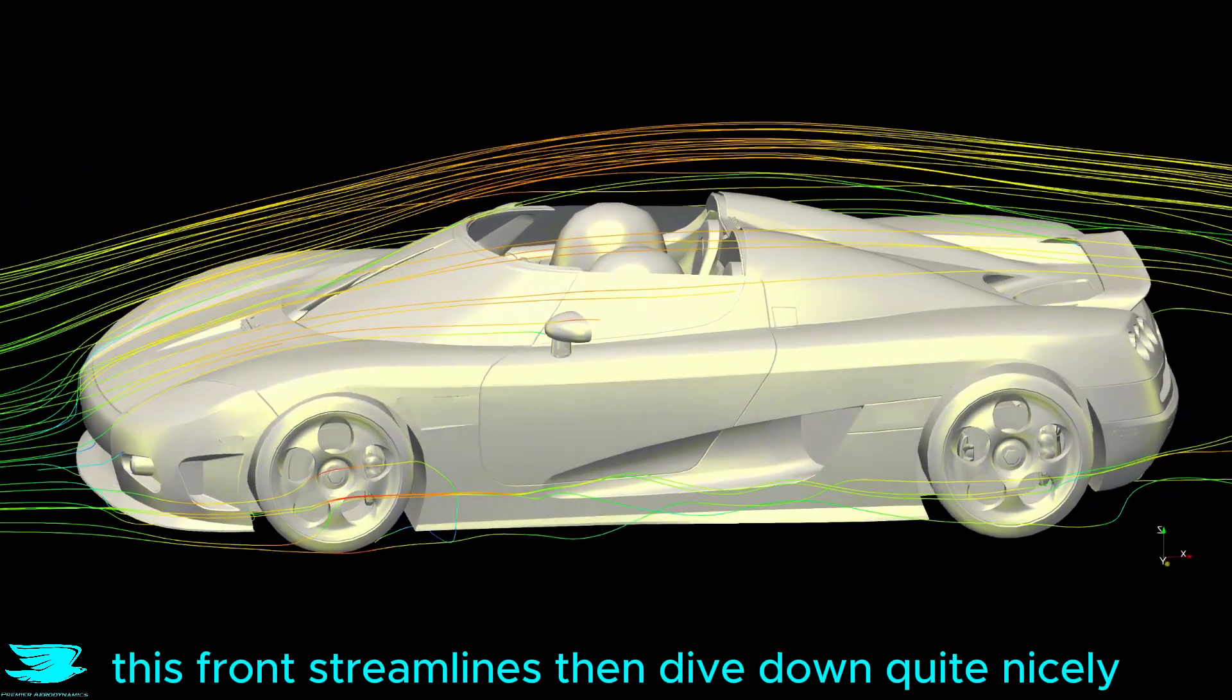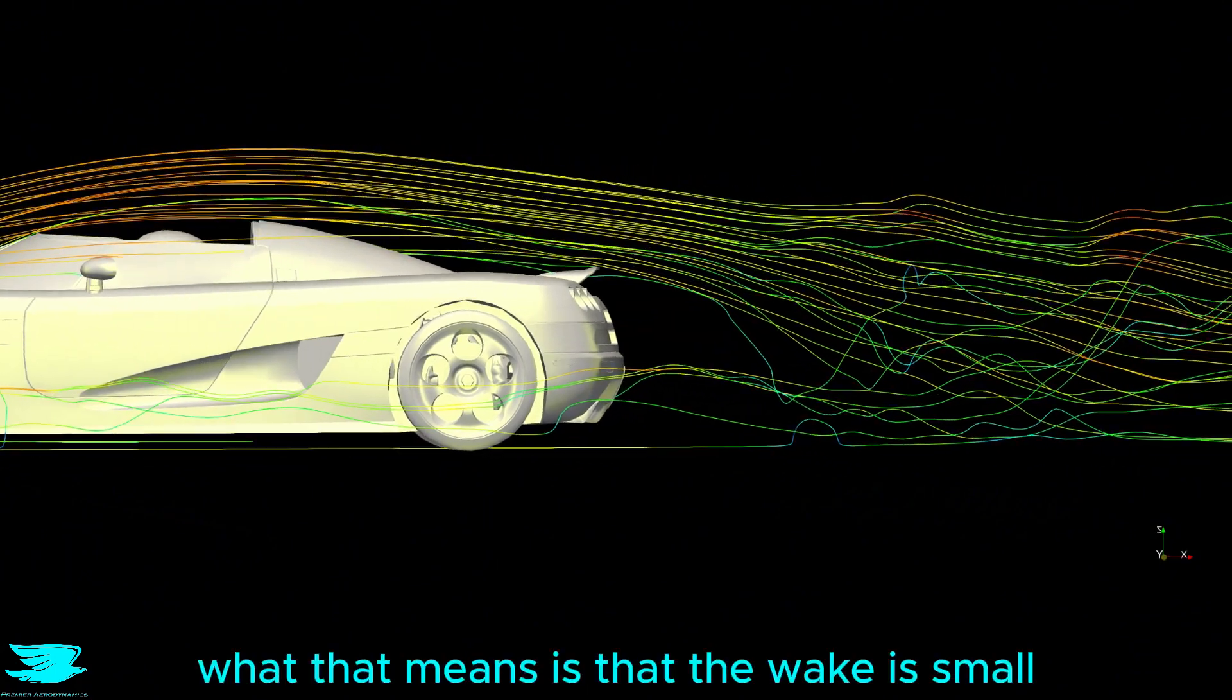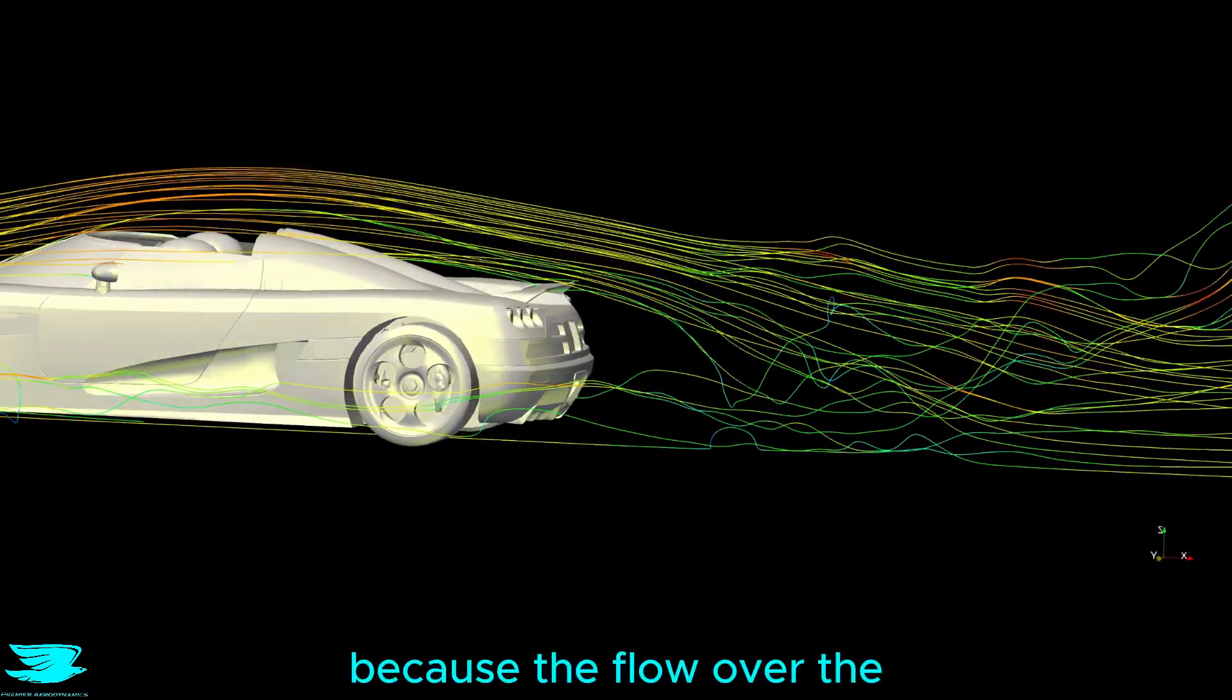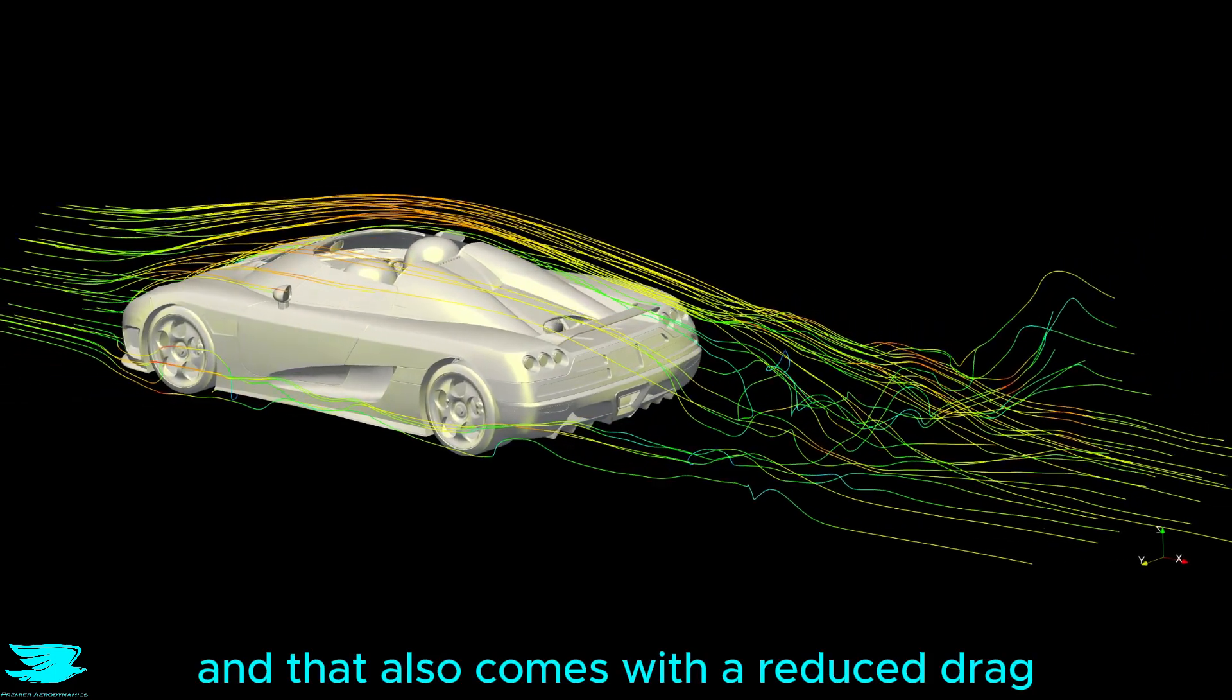These front streamlines then dive down quite nicely and join the rest of the wake about half a car length downstream. What that means is that the wake is smaller because the flow over the top is being controlled a little more, and that also comes with a reduced drag too.